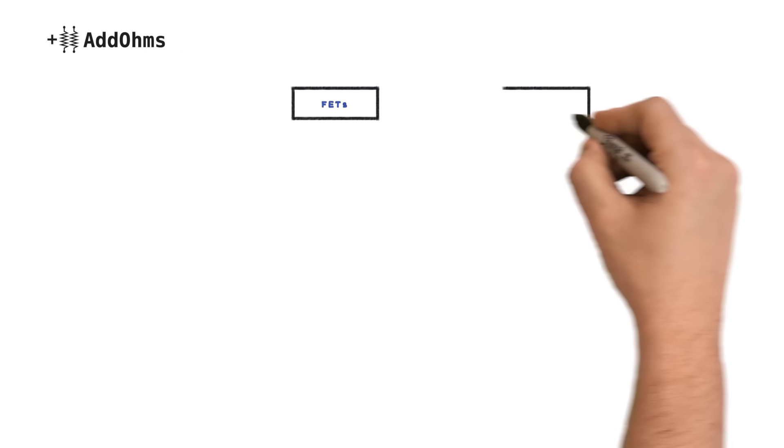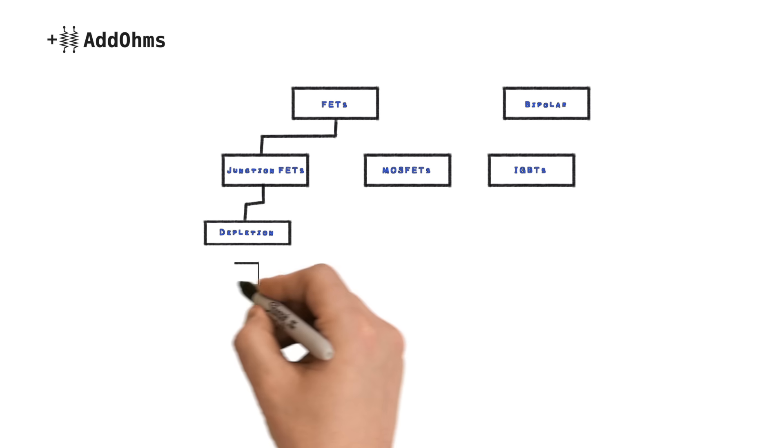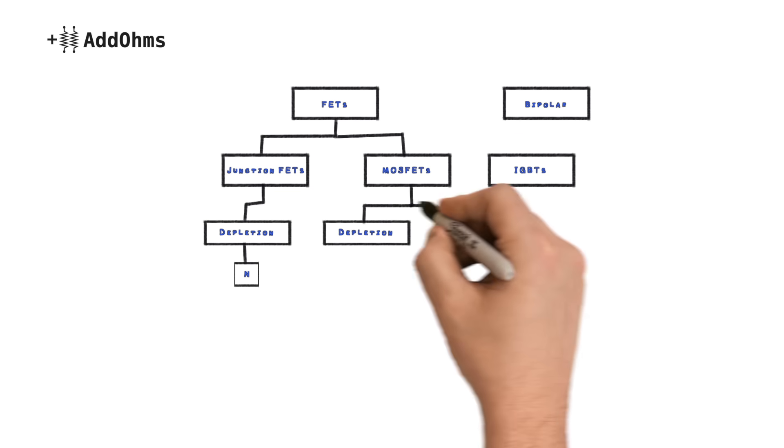MOSFETs belong to a family tree of field effect transistors, known as FETs. There are JFETs, MOSFETs, and IGBTs. JFETs actually work a little bit like a BJT, which we've already talked about. For this video, we're focused on the MOSFET, which has two types of modes called depletion and enhancement.